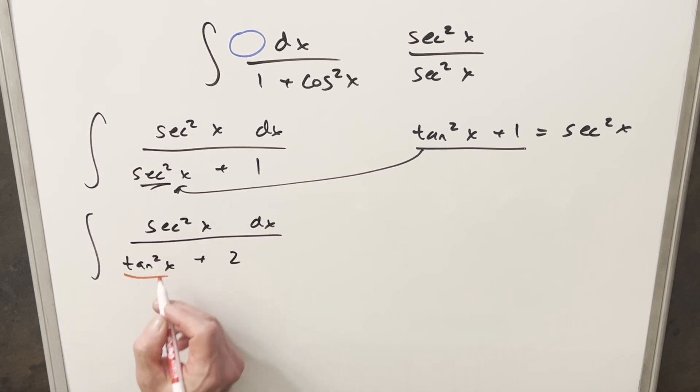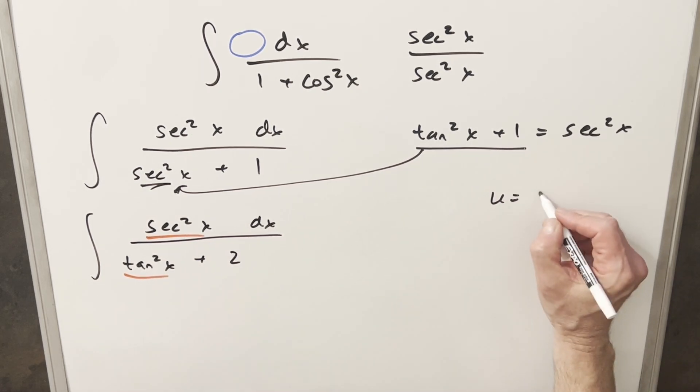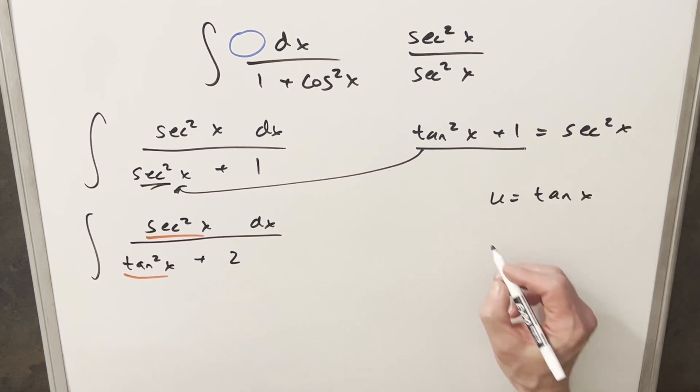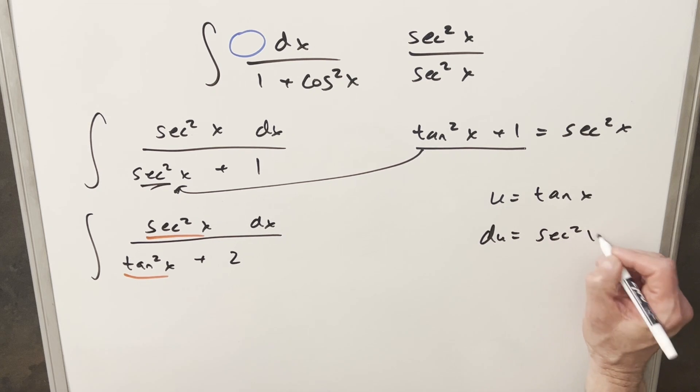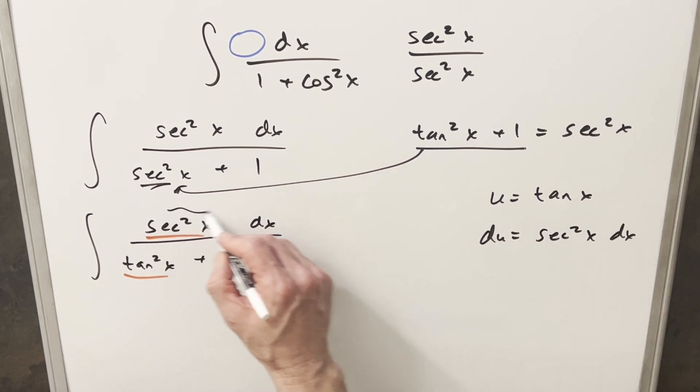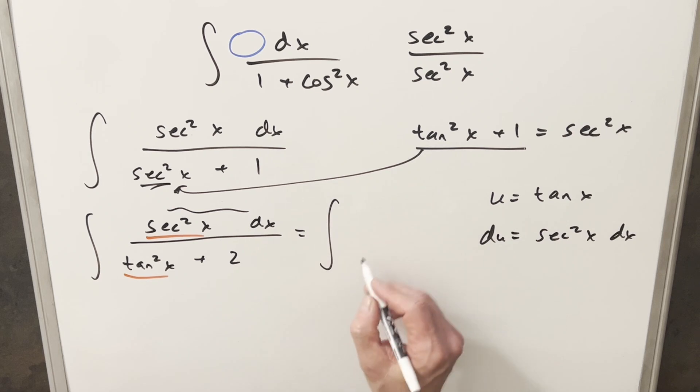But now we have the u-substitution we want because the derivative of tangent is secant squared. So let's do a u-sub. We'll say u equals tan x. Take the derivative, so du is secant squared x dx. This is our du, and we'll go ahead and substitute.